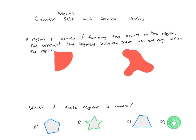So for example, the region on the left here is convex, because any pair of points I pick in the region, the straight line between them also lies entirely within the region.